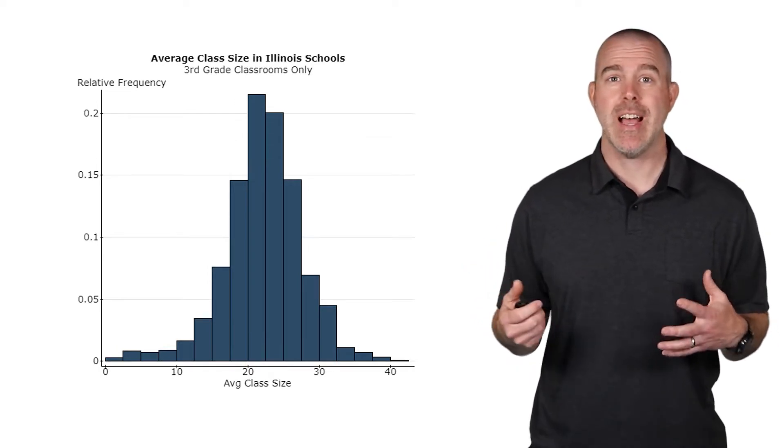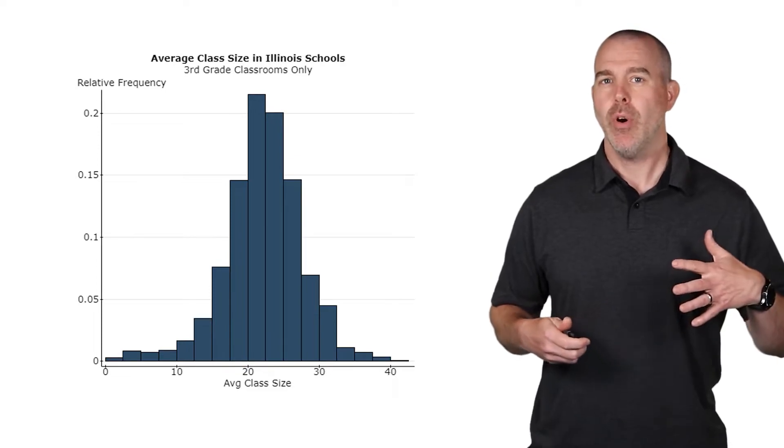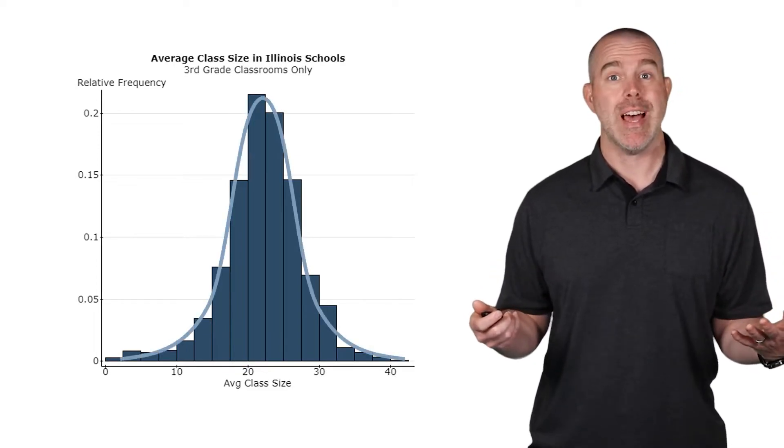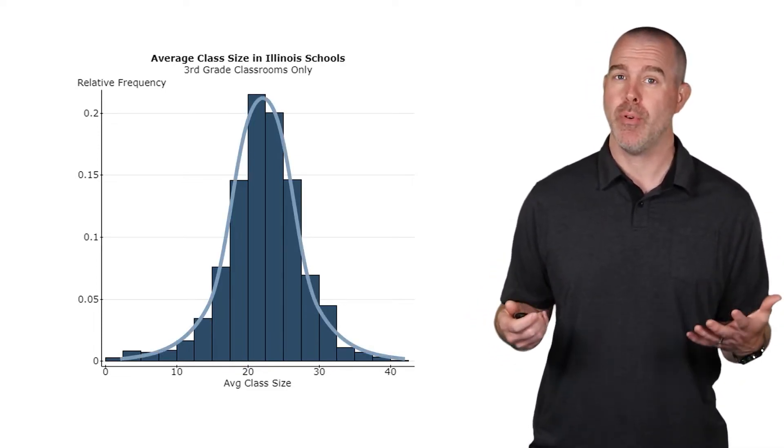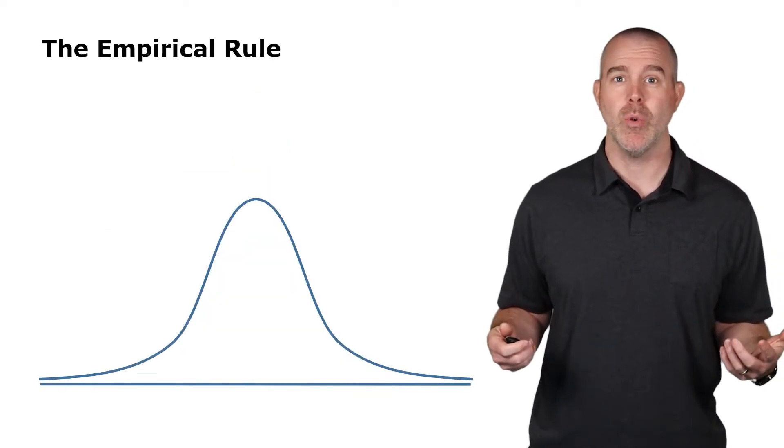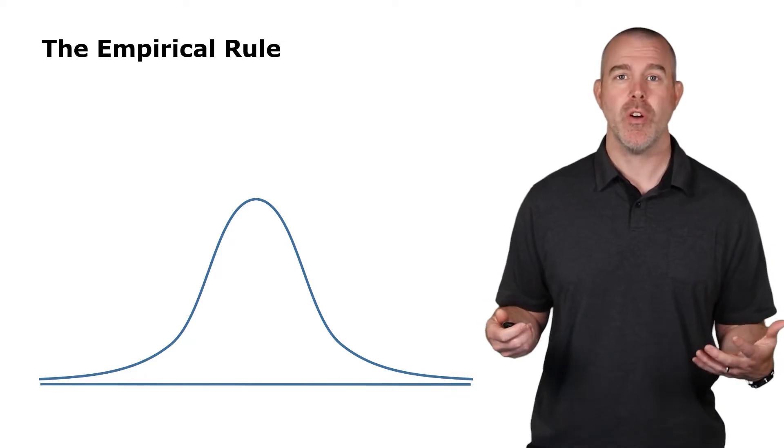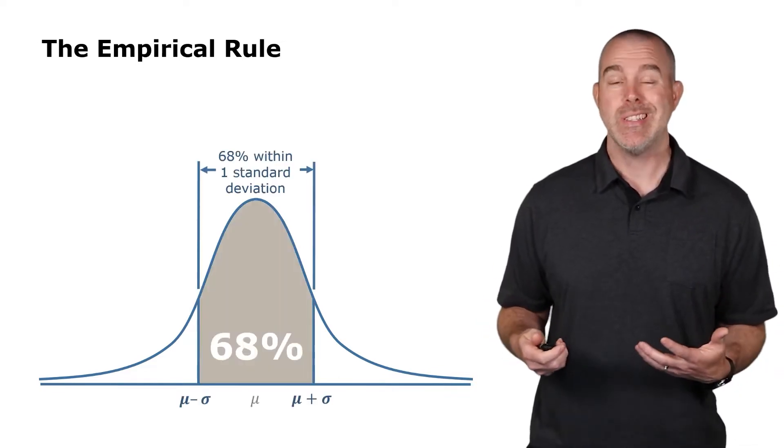This one is average class size, happens to be third grade average class size. In fact, if you put a little bell-shaped curve on top of this one, it seems to fit it pretty well. We've actually talked about that bell-shaped curve when we did the empirical rule.